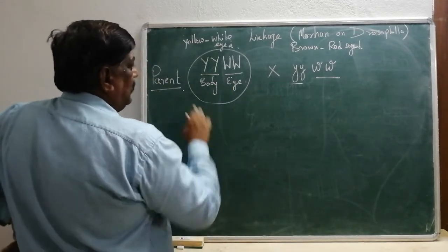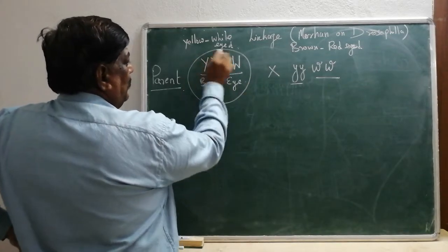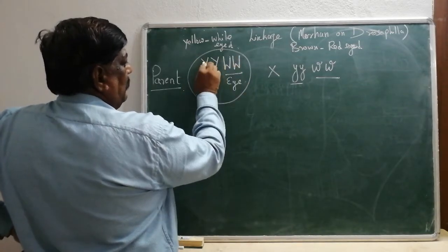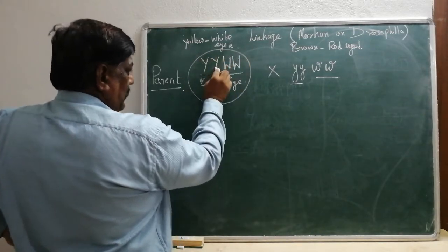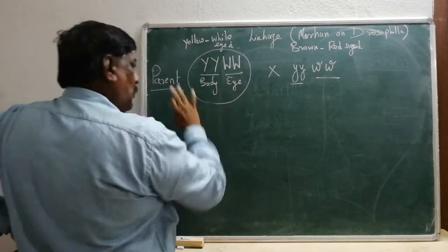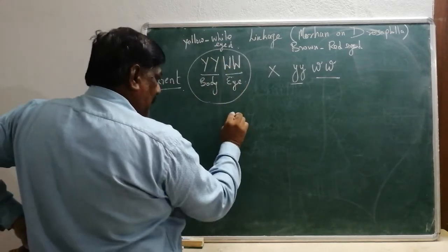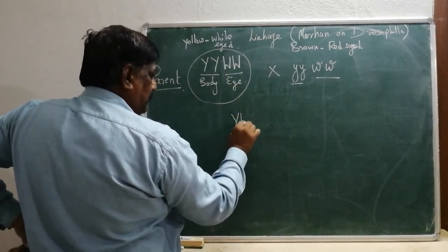The gametes are formed — capital Y, capital W; capital Y, capital W — so all the gametes from this parent are of the same type.